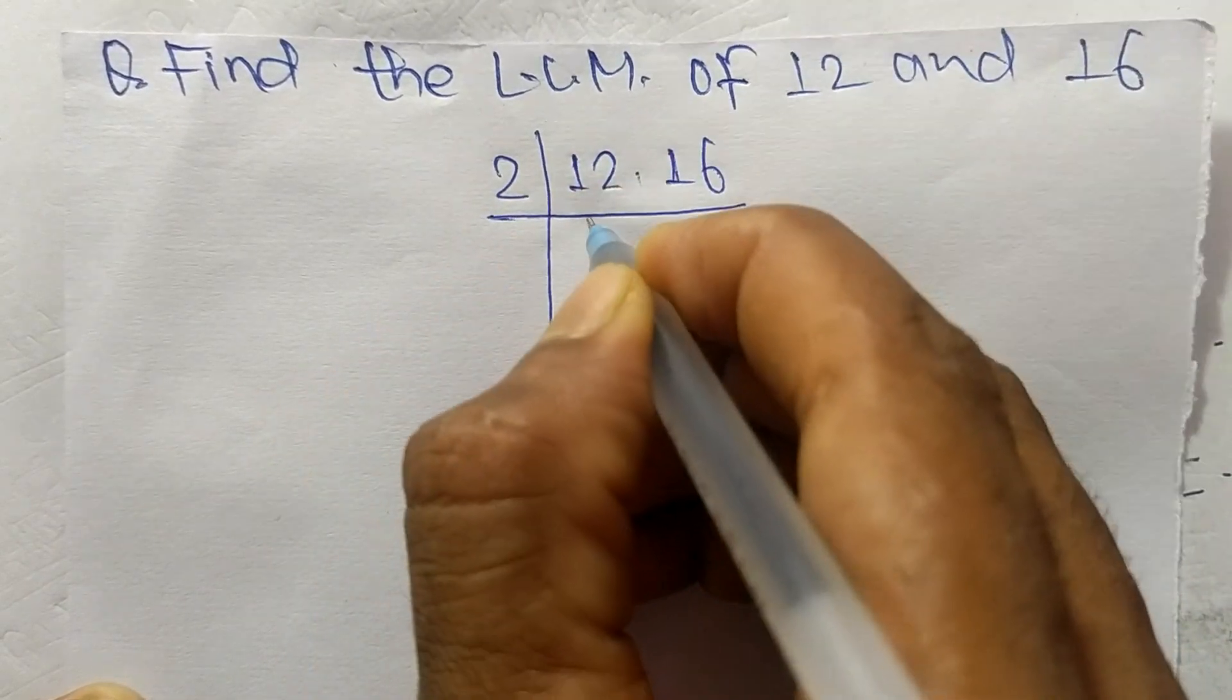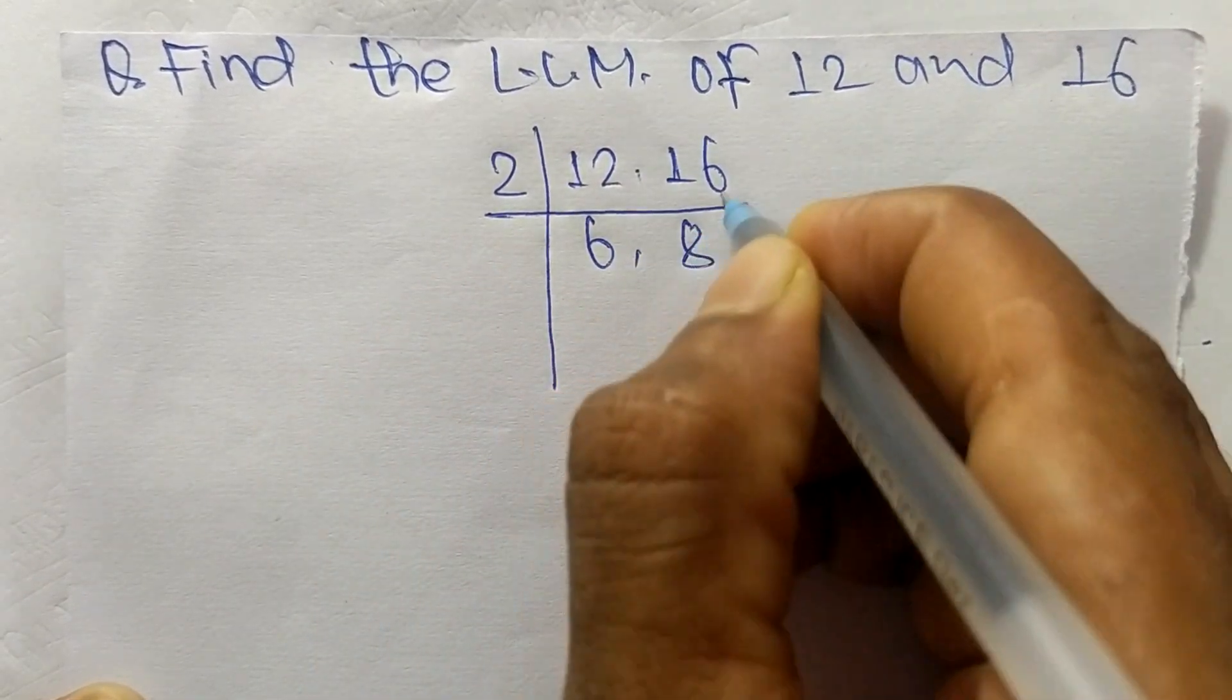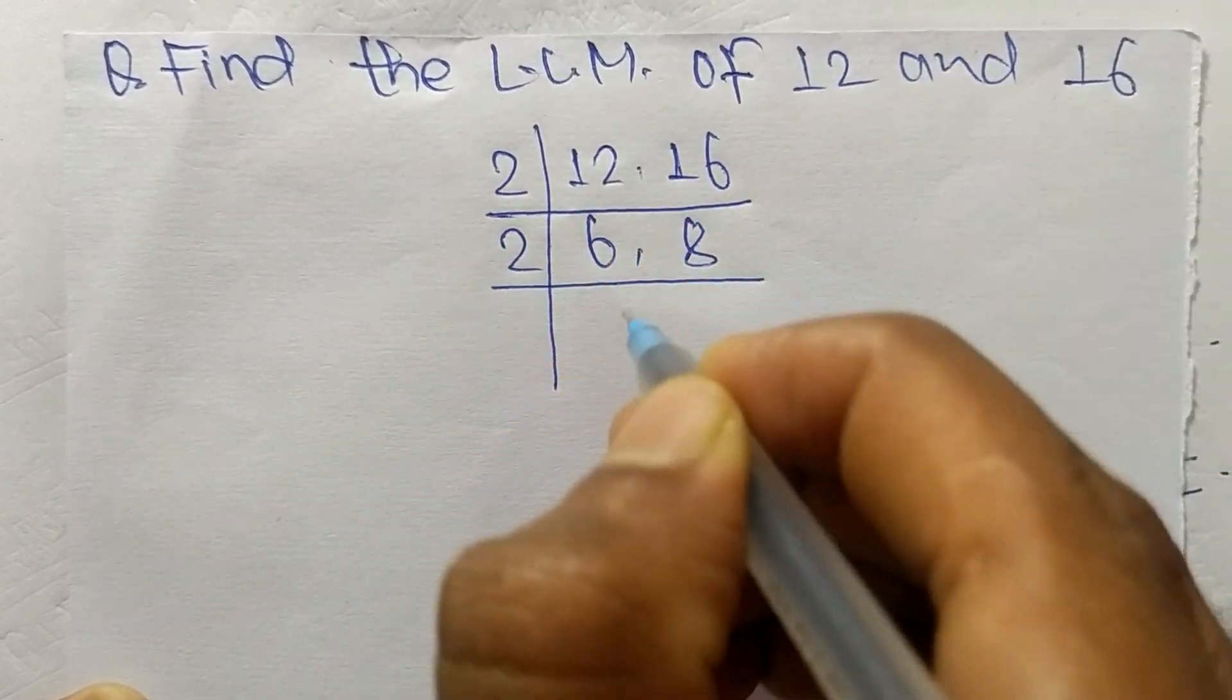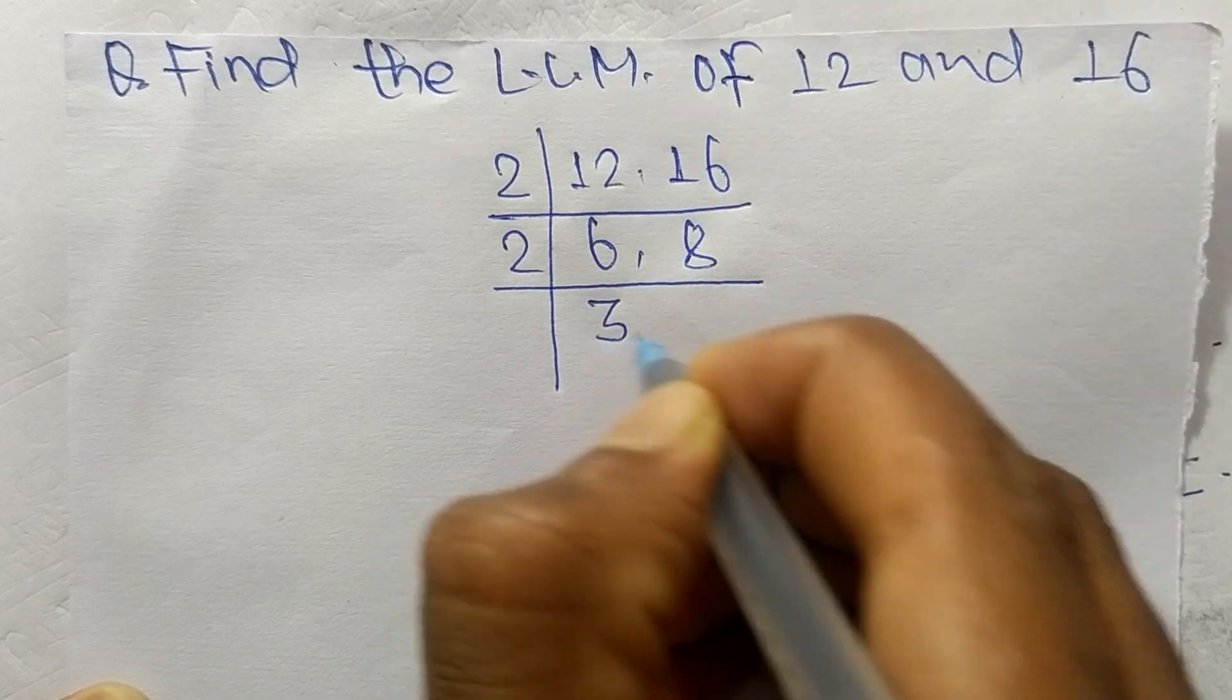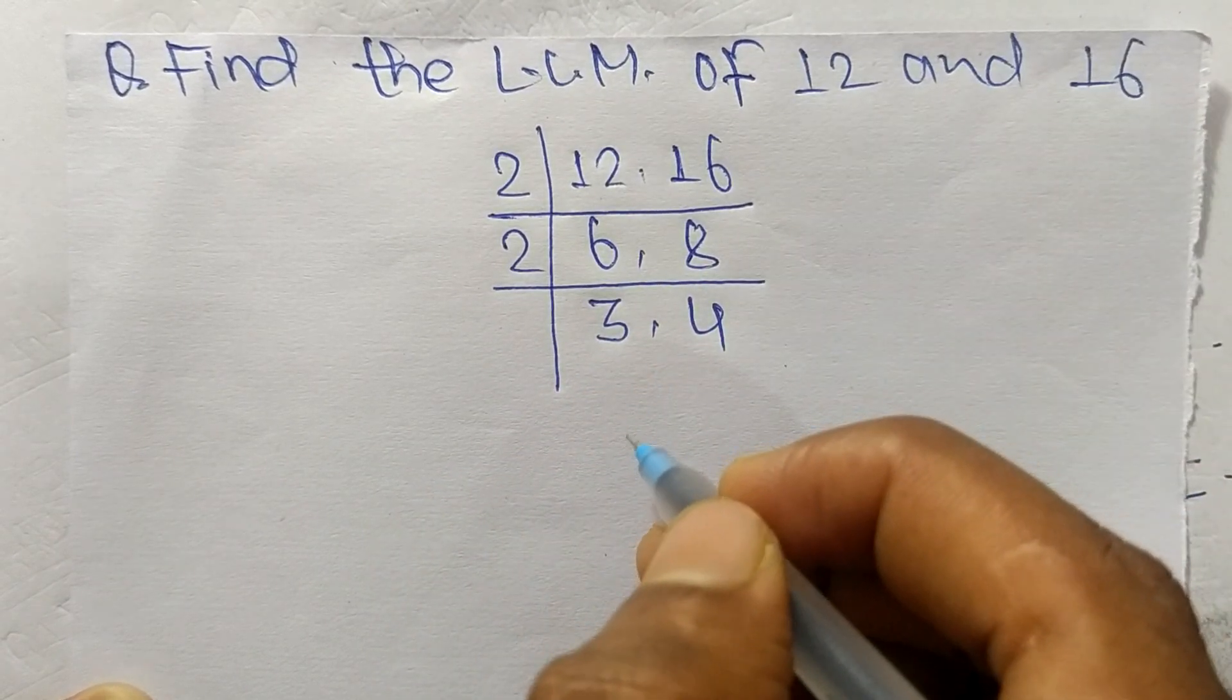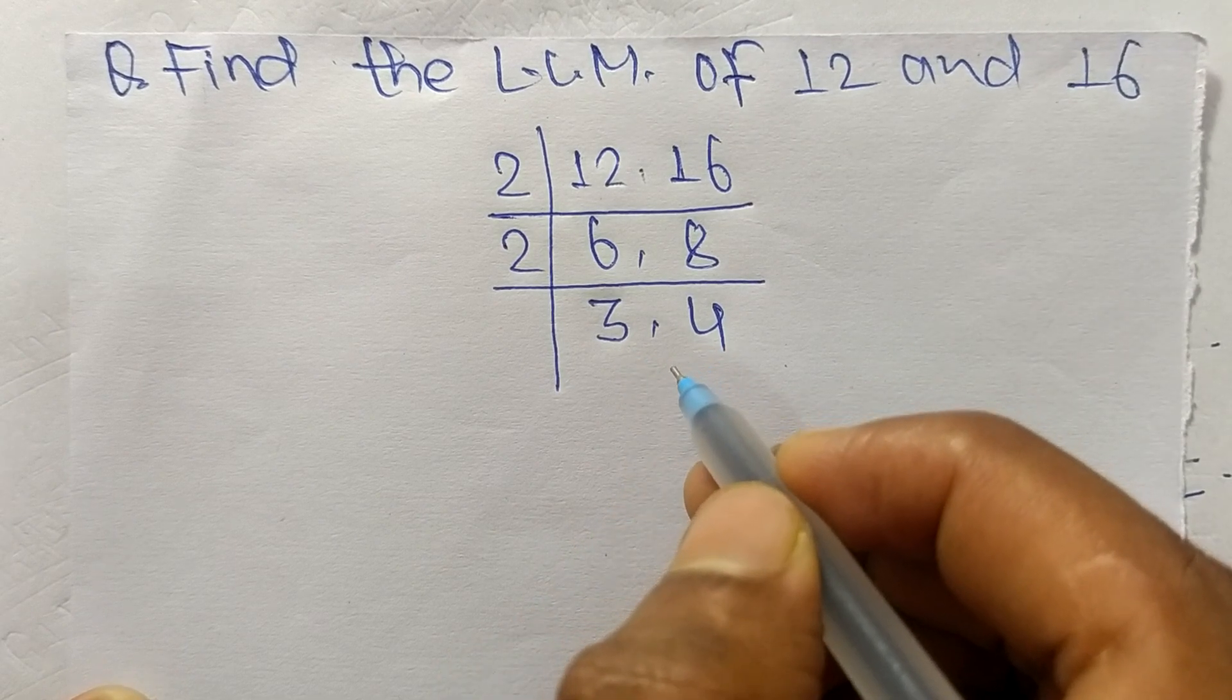So the number is 2. 2 times 6 means 12, 2 times 8 means 16. Again it is divisible by 2, so 2 times 3 means 6 and 2 times 4 means 8. So we have here 3 and 4 which is not exactly divisible by the same number.